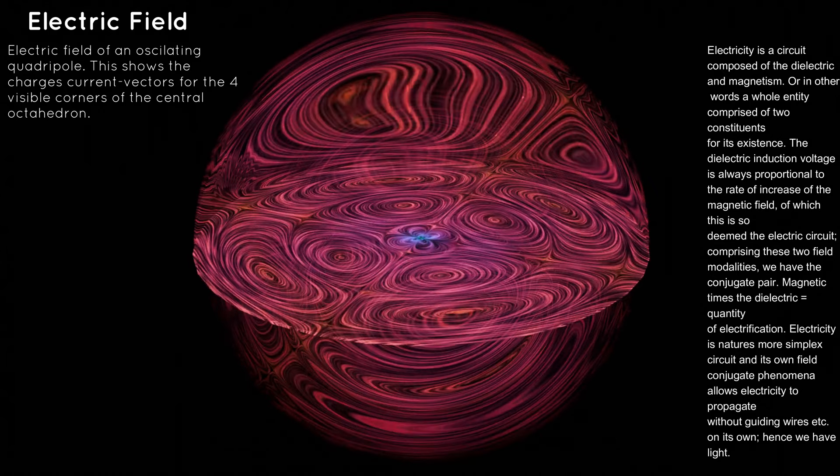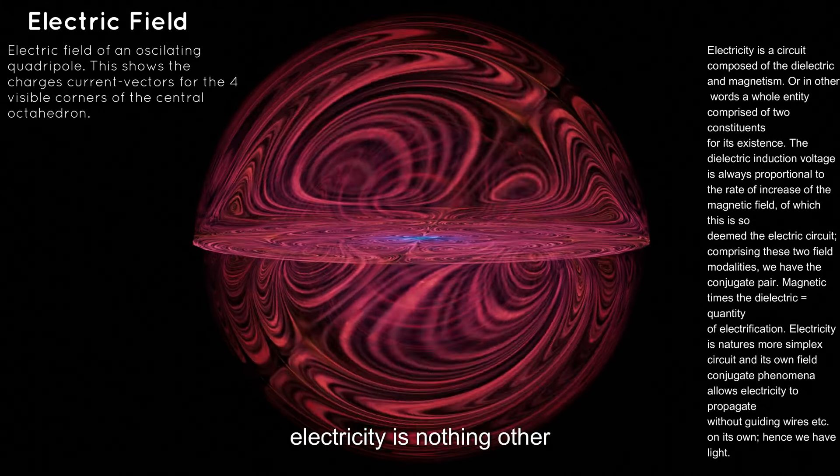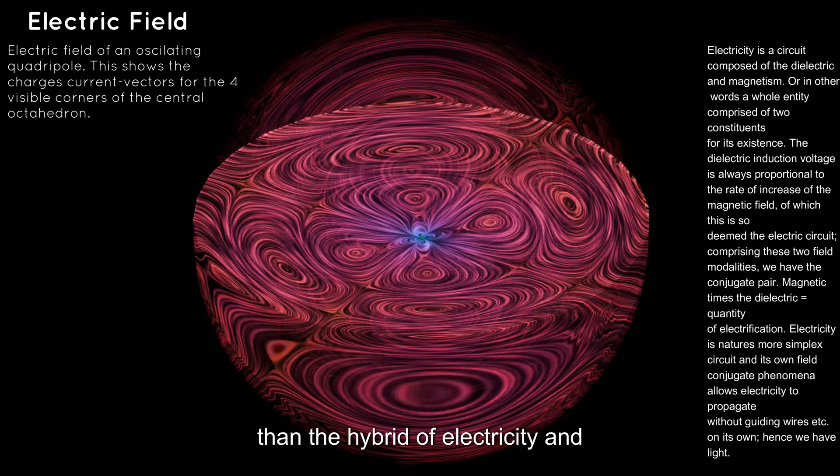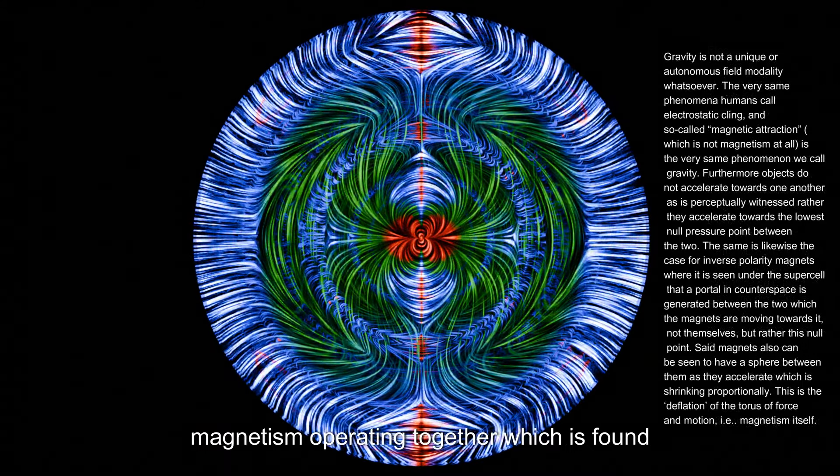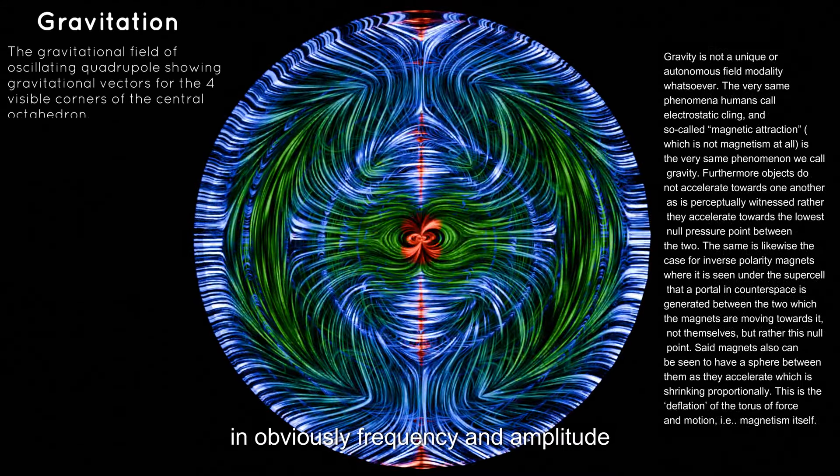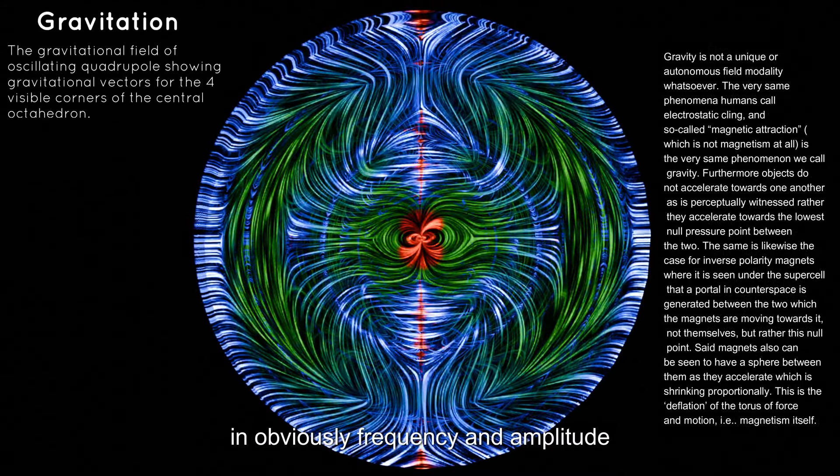Here we have electricity, which, by the way, is five times five, hue and plank electrification. Electricity is nothing other than the hybrid of dielectricity and magnetism operating together, which is found in frequency and amplitude, constantly pulsing back and forth.